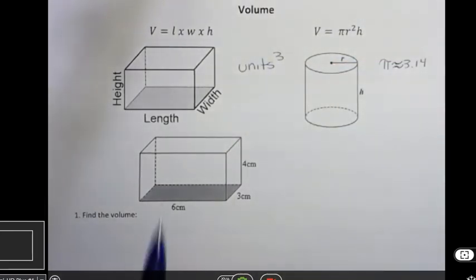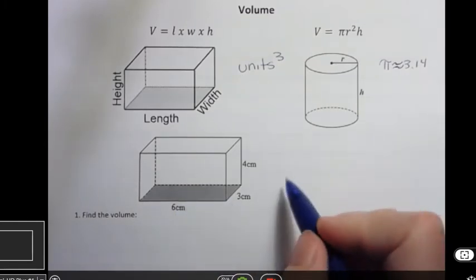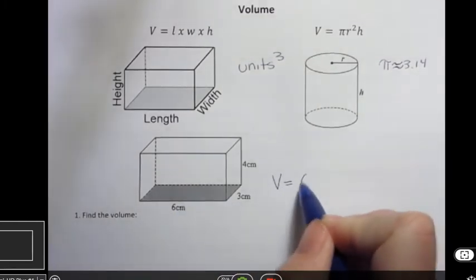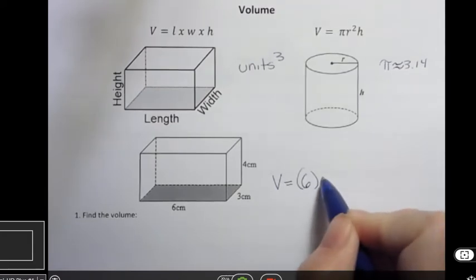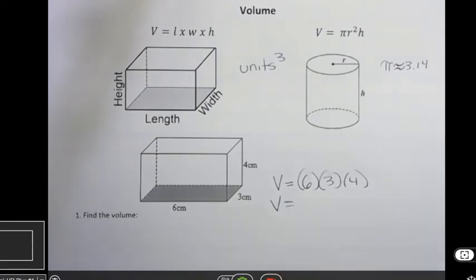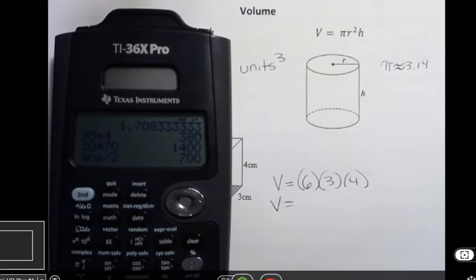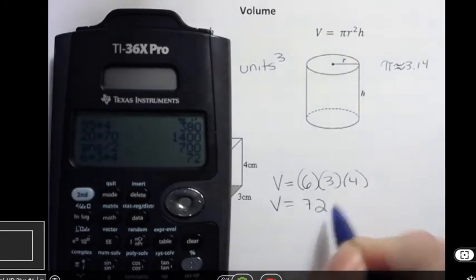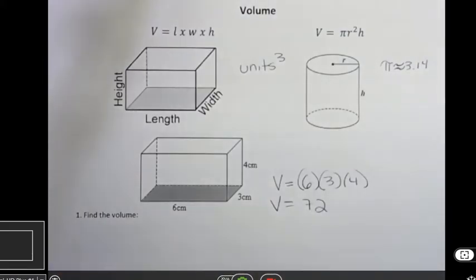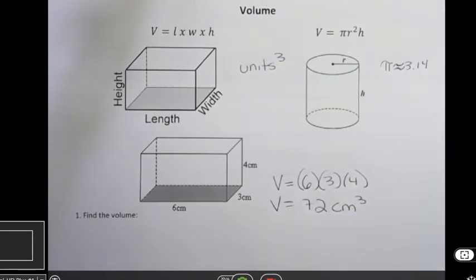Okay, so the first one says find the volume of this rectangular prism. And so the volume is just going to be 6 times 3 times 4, and of course it doesn't matter what order you write those in because the commutative property tells us we can change the order without changing the answer. And so 6 times 3 times 4 is 72, but what's the unit? Well it's centimeters and it's 3 dimensional so it's centimeters cubed.